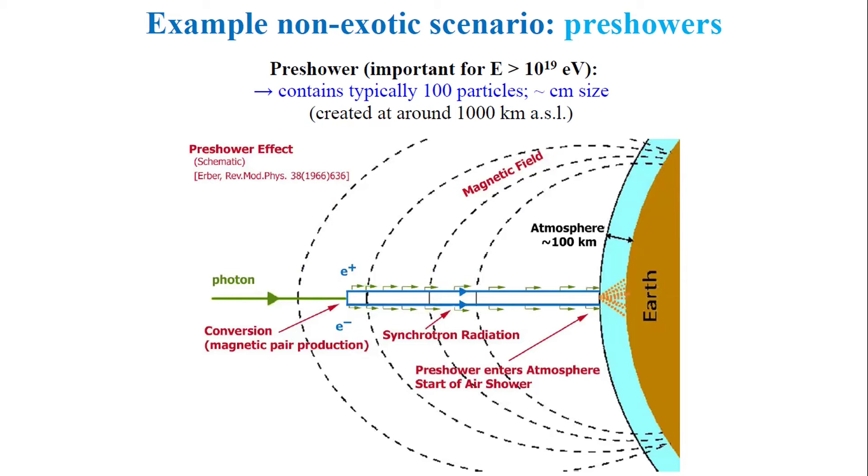The scenarios which could potentially lead to the production of cosmic ray ensembles are already known and described in the literature. The first scenario is called the pre-shower, when the photon undergoes magnetic pair production just entering the Earth's magnetosphere. Due to synchrotron radiation of the electron-positron pair, it produces a cascade on top of the atmosphere. Such pre-showers typically contain hundreds of particles and are typically centimeters or meter size.